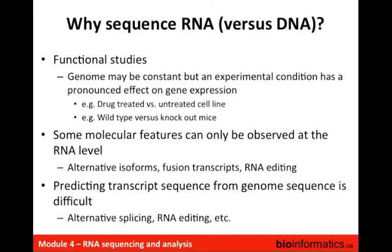There are definitely some molecular features that can only be observed at the RNA level — for example, alternative isoforms, fusion transcripts, and RNA editing are really only observable at the level of the RNA. Predicting the transcript sequences from the genome is very difficult. It's much easier, if you can, to just sequence the transcriptome and align it back to a reference genome or assemble it de novo.